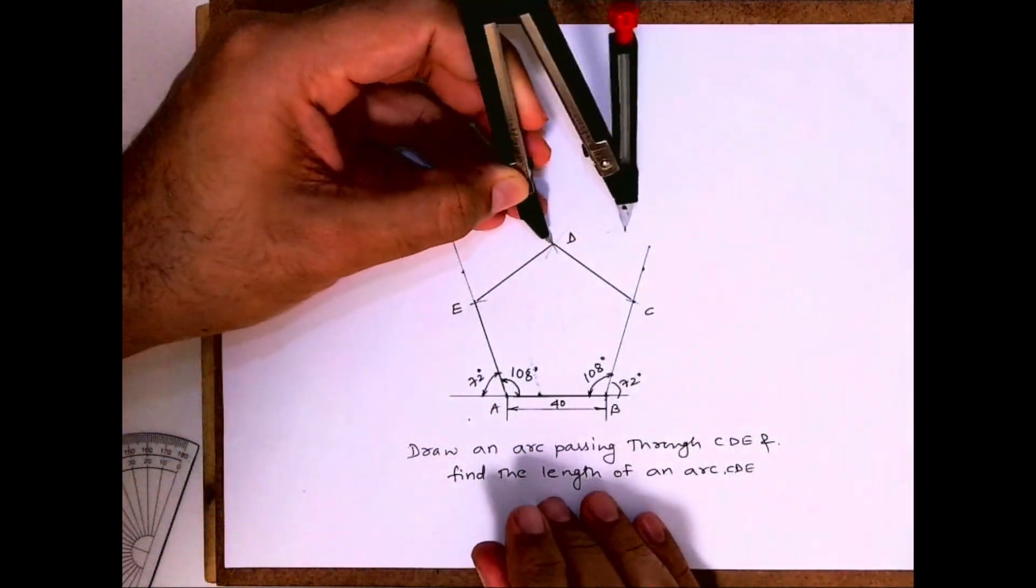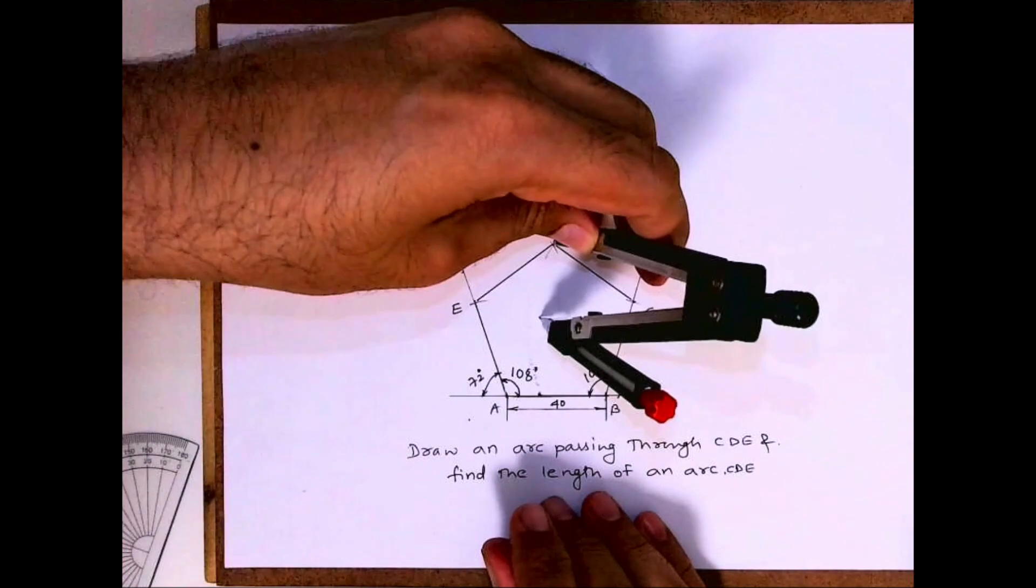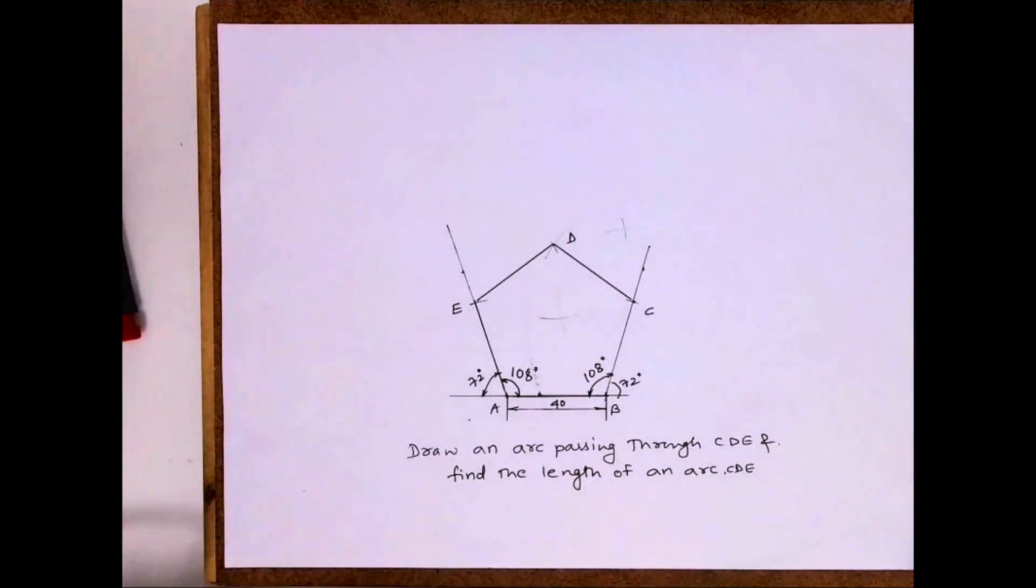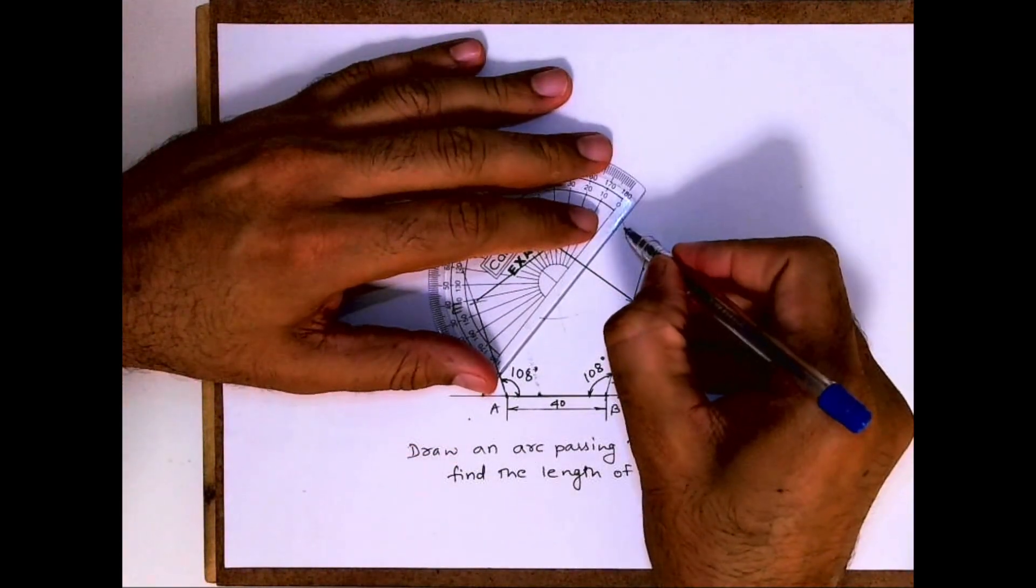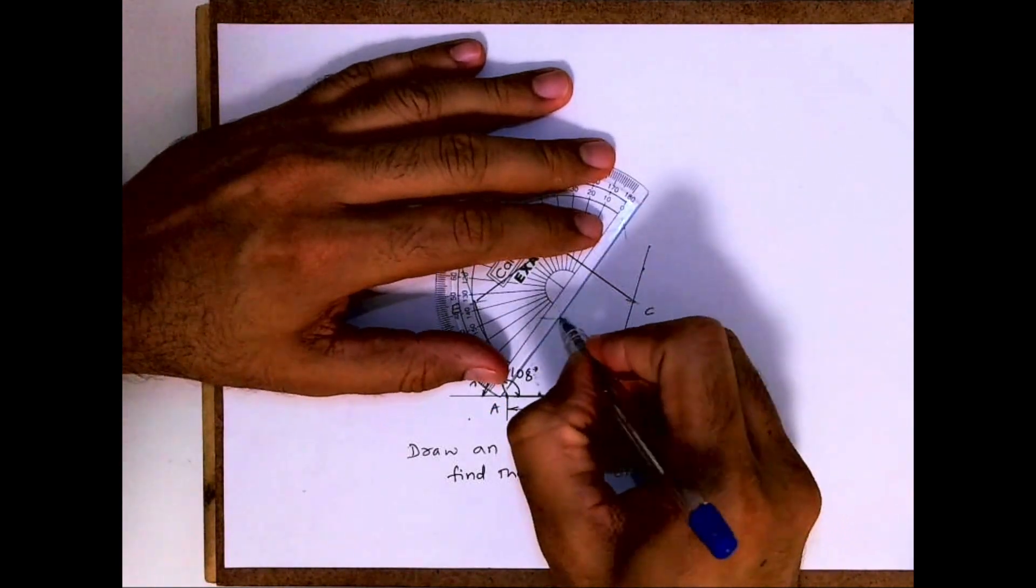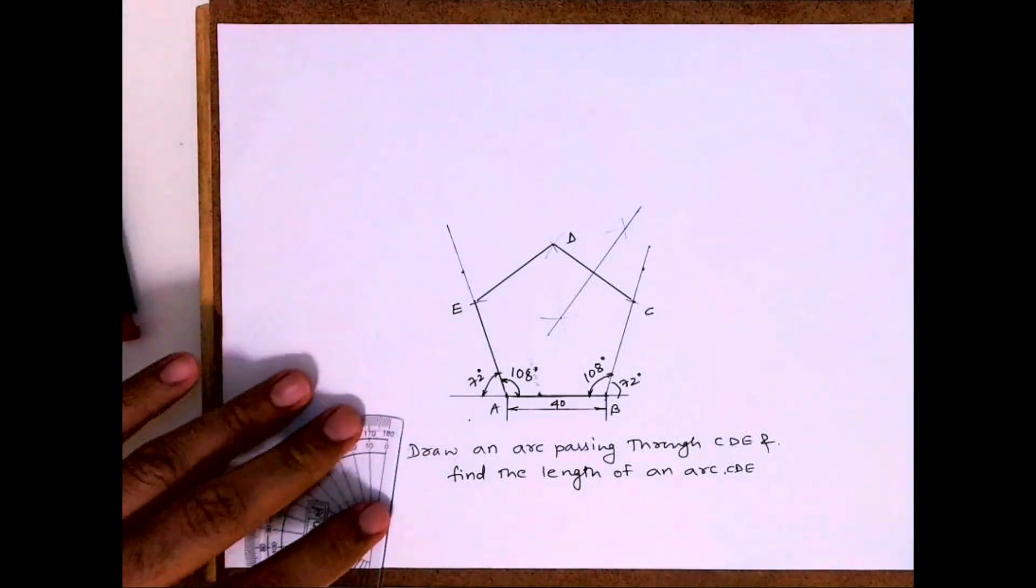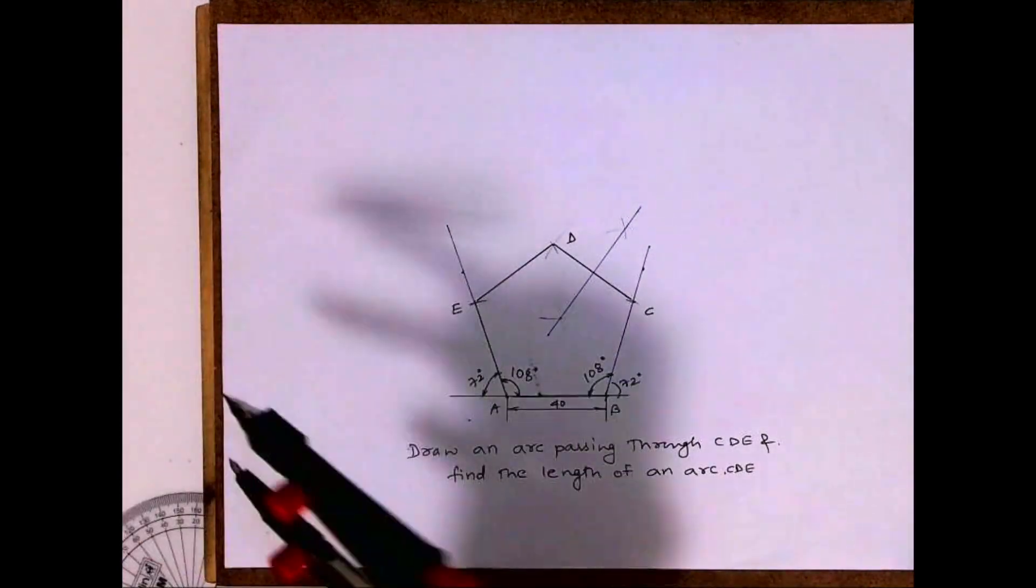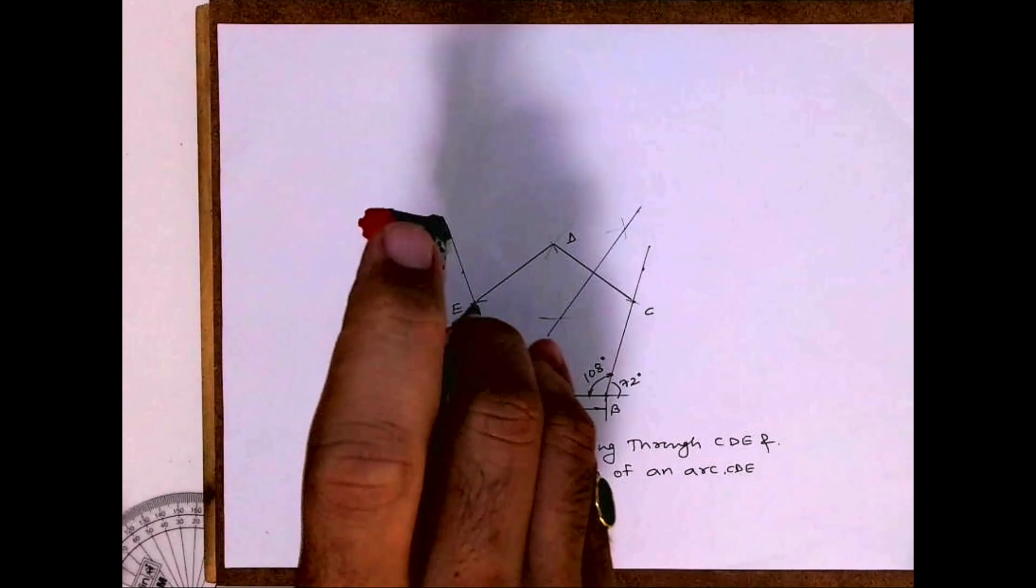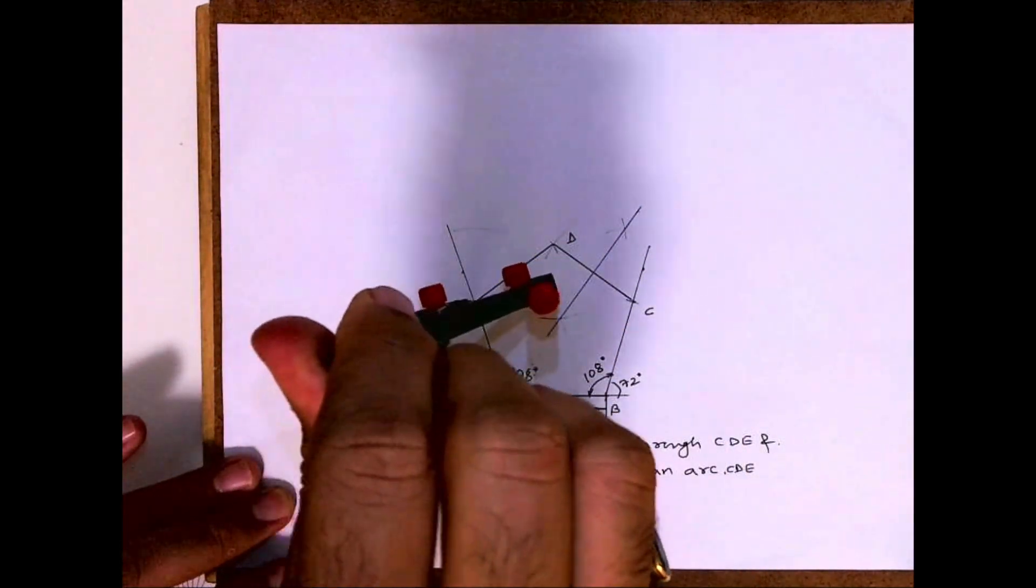You take more than half of the line CD and you cut from C and D. Then you bisect DE, you take more than half.